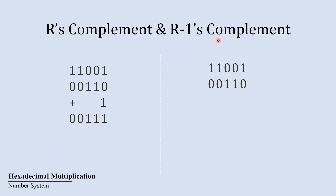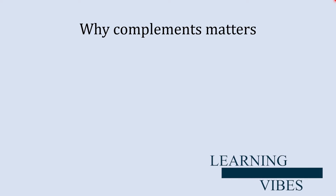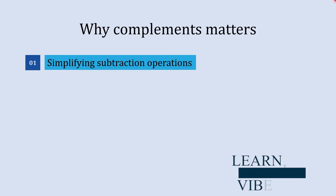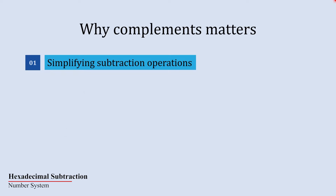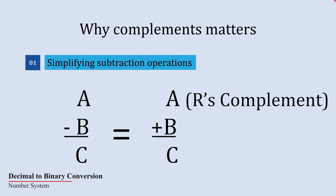Do you know why these complements are important? Let's understand their importance. First of all, they are useful in simplifying the subtraction operation. R's complement simplifies the operation by allowing the use of addition. Subtracting a number A from another number B is equivalent to adding B and the r's complement of A.